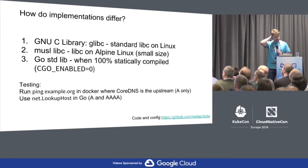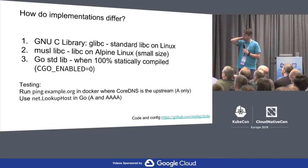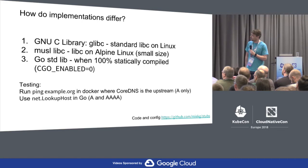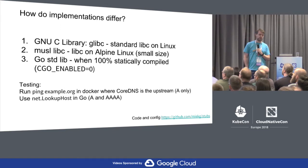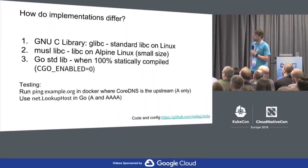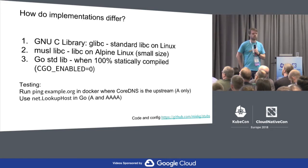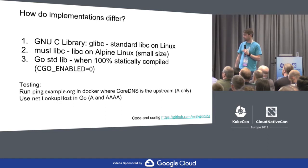So what implementations are popular? glibc is basically the default libc on all Linux versions. musl libc is a newer one, really really small — they aim to be small. It's the standard libc on Alpine Linux. And the Go standard library: if you compile it 100% statically with CGO_ENABLED=0, you will use the Go implementation of the resolver. If you don't do that, it will fall back to whatever is on the system — musl or libc.